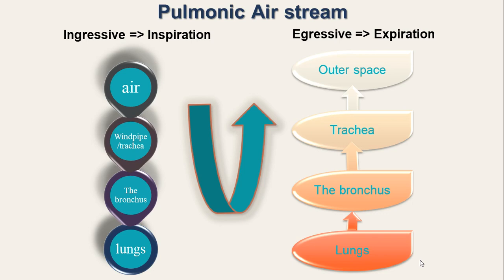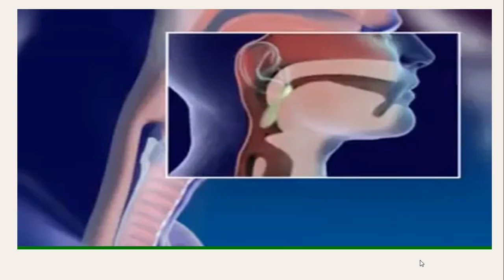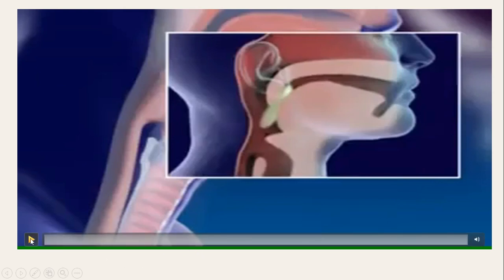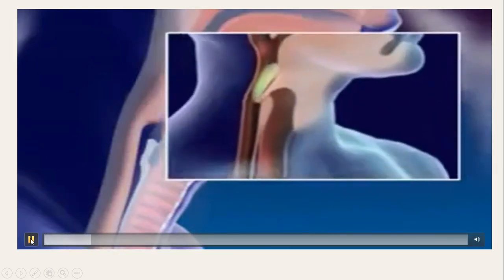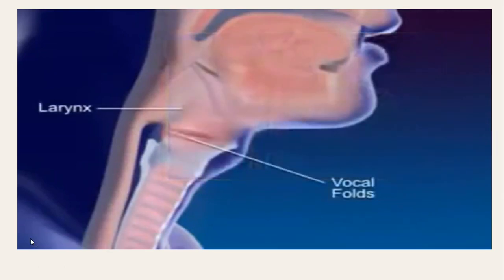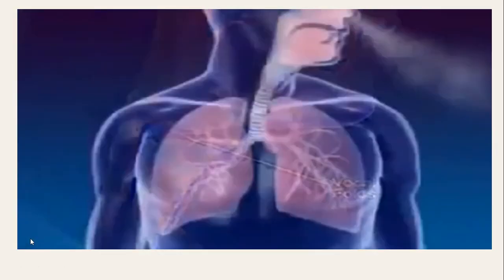When we breathe out, the muscles of the chest make the lungs contract. The respiratory system, which lies in the trunk of our body, is very much important for the production of speech because we need air for speaking. For the production of most of the speech sounds, the pulmonic air stream mechanism is followed.